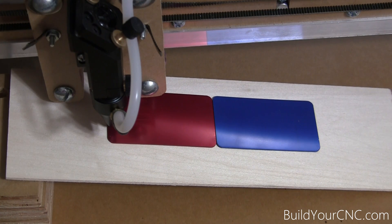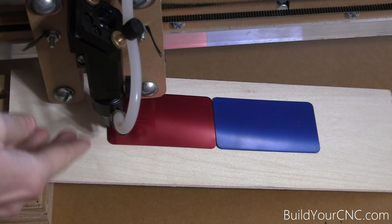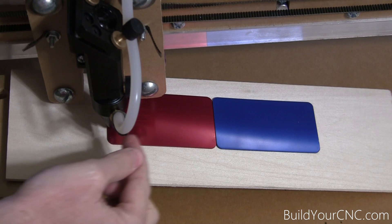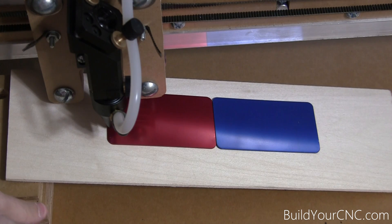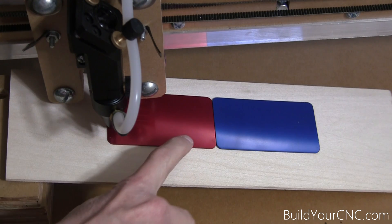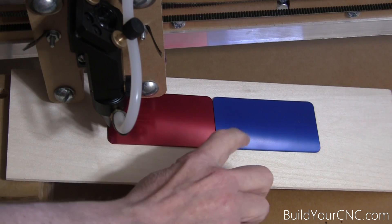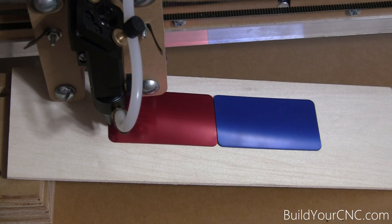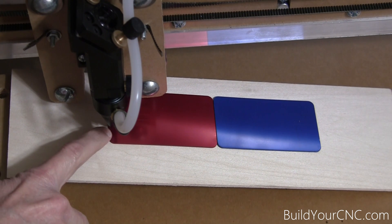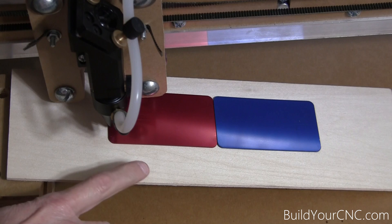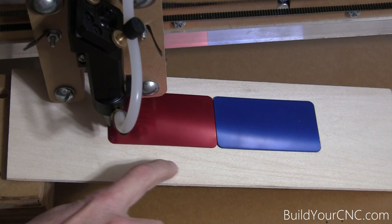This is a technique that you can use the actual burning of the laser. You're going to bring it over at a constant rate and find out where the optimal focal length is by how it burns the wood or burns some anodized aluminum. The optimal length from the tip of the nozzle to the material will be the location where you'll see the thinnest line.